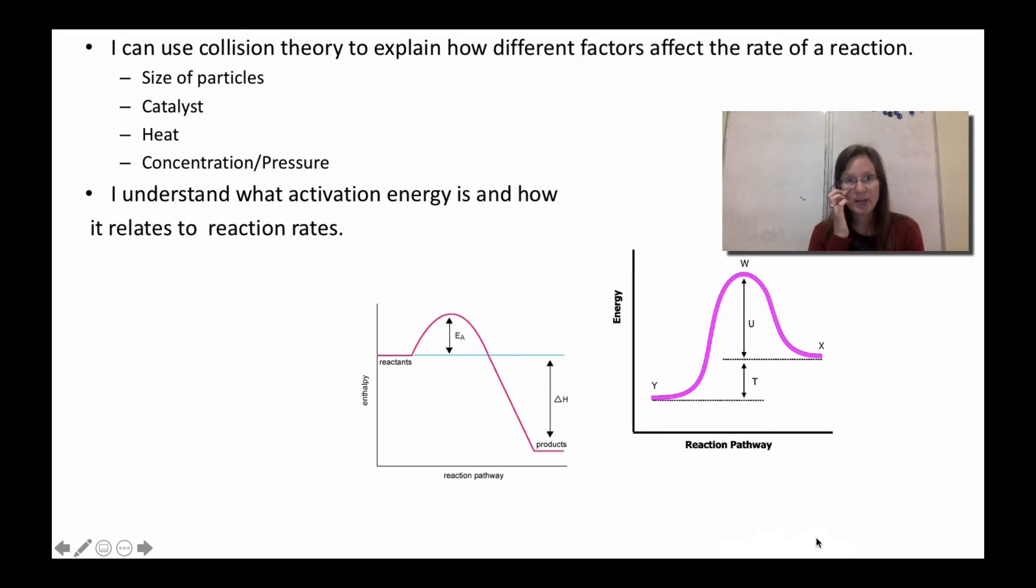So whether it's an exothermic reaction like the first one or an endothermic reaction like the second one, you always have this peak or large barrier that you need to get over. For the first graph, that activation energy is labeled EA, and then the second one, the amount of activation energy is T plus U—it's all the way up. It would just be U in reverse, but it's T and U going forward.